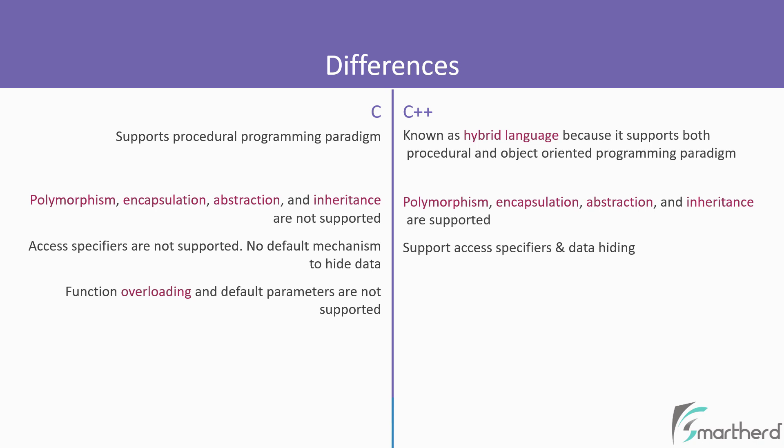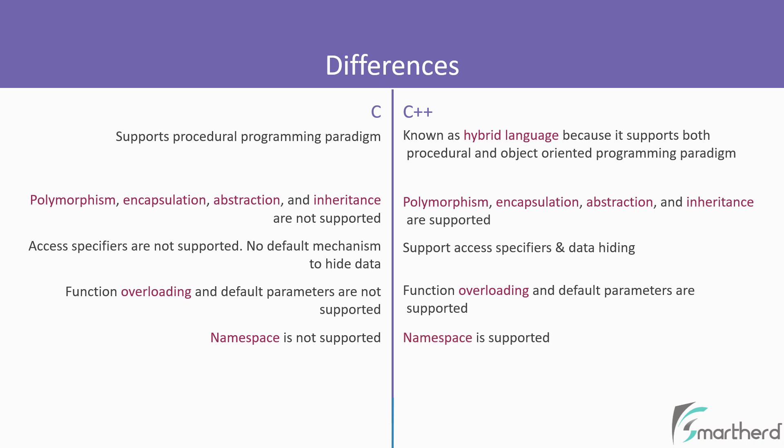Features related to functions such as function overloading and default parameters are not supported in C. While on the other hand, in C++, they both are supported. There is no feature like namespace in C language, while it is highly supported in C++.